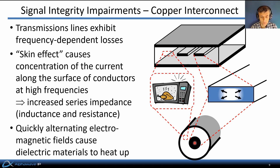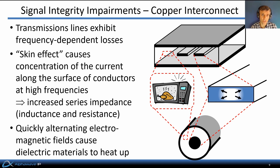Secondly, we should note that quickly alternating electromagnetic fields arise in the dielectric in these waveguides. This causes the dielectric materials to heat up, the same way a chicken heats up in a microwave when exposed to quickly alternating microwave fields. That heating is an indication that some energy is being dissipated at high frequencies, giving rise to an additional source of frequency-dependent loss.